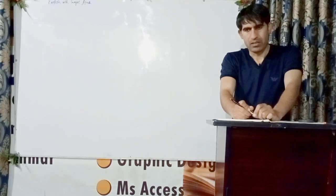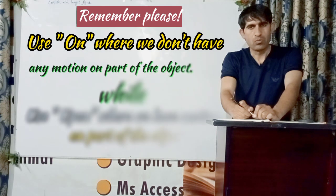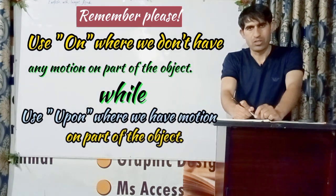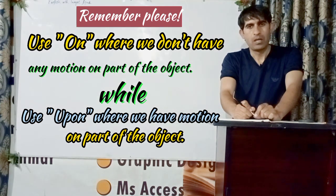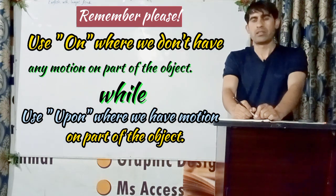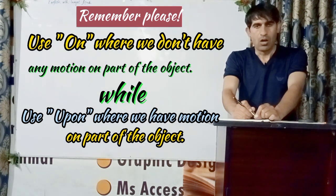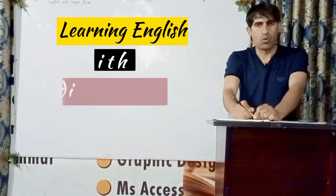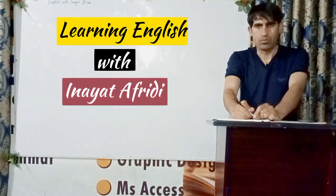To summarize: use 'on' when talking about objects that are at rest and don't show movement, while use 'upon' when talking about objects or things that are in motion. If the difference between 'on' and 'upon' is understood, keep watching and do subscribe to our channel. Thank you very much.